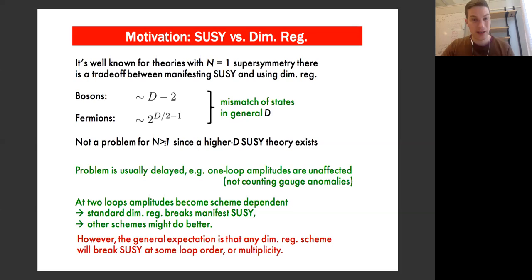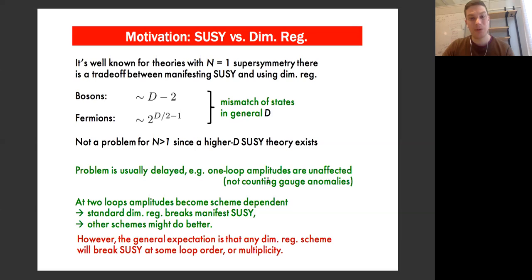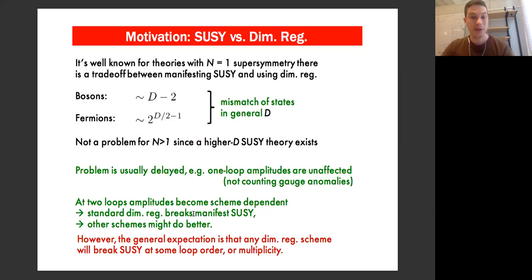Sometimes this is taken as meaning that all supersymmetric theories have this problem. But of course, if you have more than N equals one, there's always a higher-dimensional supersymmetric theory that you can use via dimensional reduction to define a dimensional regularization. But for N equals one, there's a real problem. However, the problem is usually delayed — one-loop amplitudes are not affected if you don't count gauge anomalies.